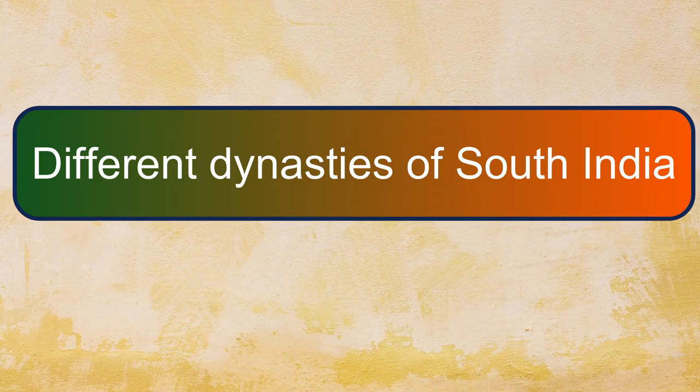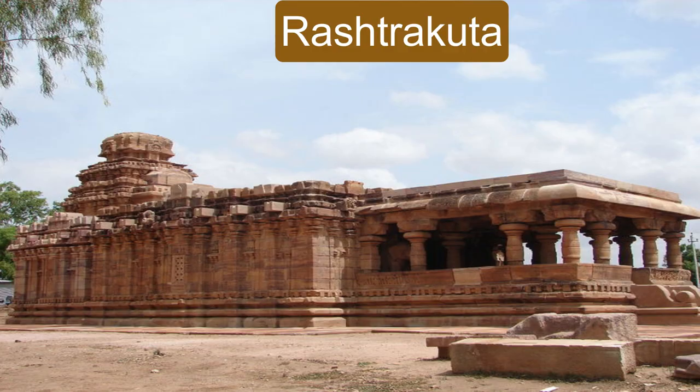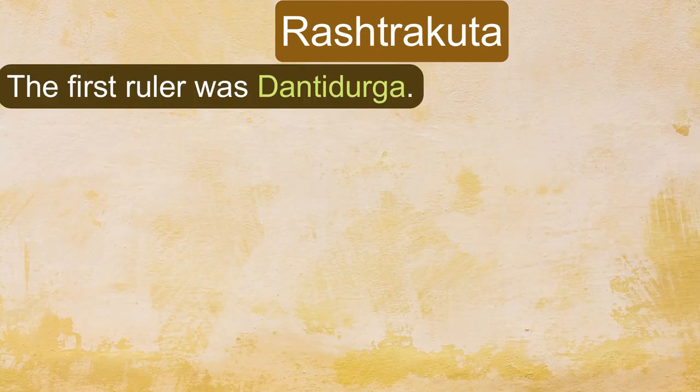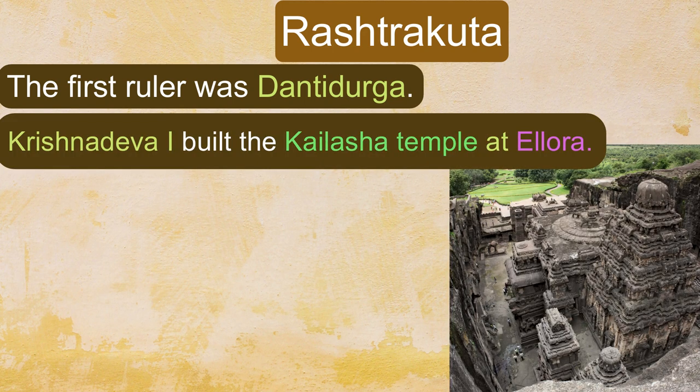Among the different dynasties, the first one is the Rashtrakuta dynasty. The first ruler of this dynasty was Dantidurga. Krishnadeva the first built the Kailash temple at Ellora.